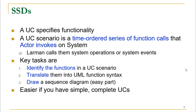Use cases specify functionality. We said that use cases are a time-ordered series of function calls the actor invokes on the system — a dialogue between the system and the user. For creating system sequence diagrams, the key tasks include: identifying the functions in the use case scenario, translating them into UML function syntax, and drawing a sequence diagram. If you have good, well-written, complete use cases, they will definitely be good input for the system sequence diagram.